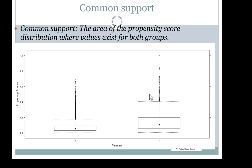Once you estimate propensity scores, you should check for common support. Common support indicates the area of the propensity score distribution where values exist for both groups. Within the examination of common support, you should also check for positivity — there should not be any propensity scores of 0 or 1, or extremely close to 0 or 1, such as 0.999999.